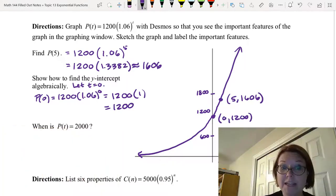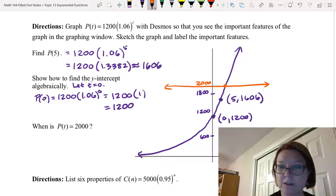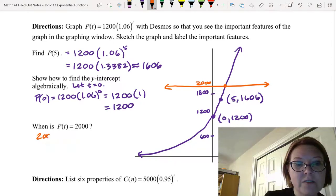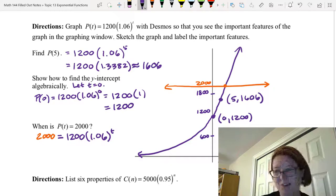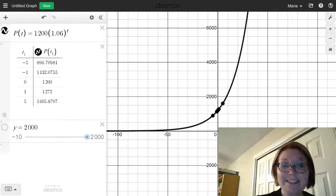Last question is, when is P(t) equal to 2000? So 2000 is actually above the scale I've drawn here just a little bit. I could put a horizontal line at 2000 and see where that horizontal line hits the graph. Essentially what I'm trying to solve here is 2000 = 1200 times 1.06 to the t. Now the problem is we don't know how to solve that yet. But we can do it with technology, and that's what we're going to do.